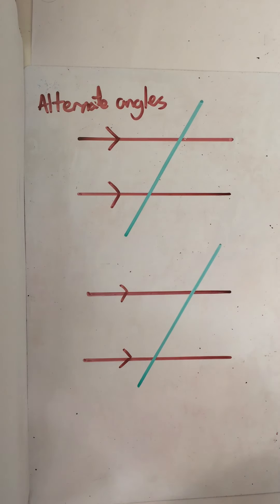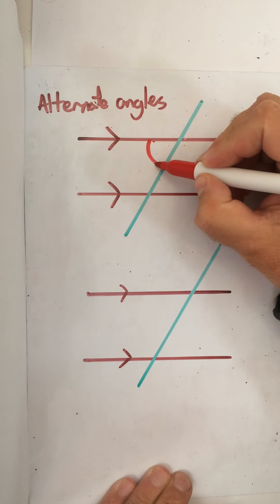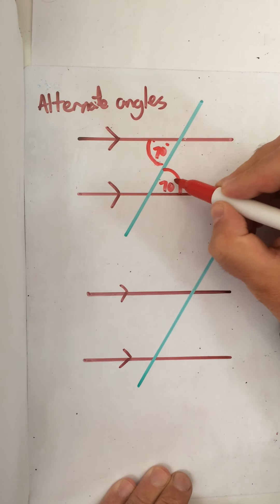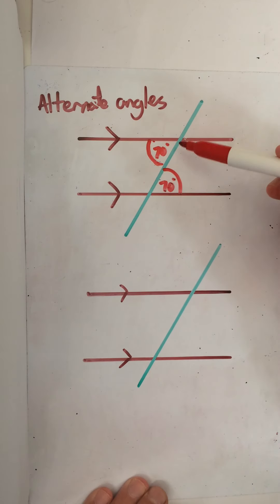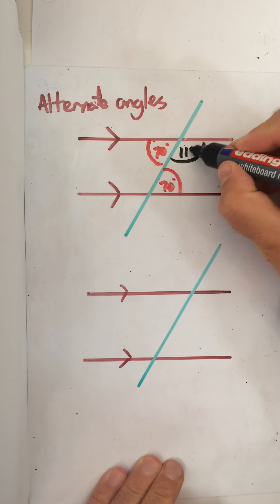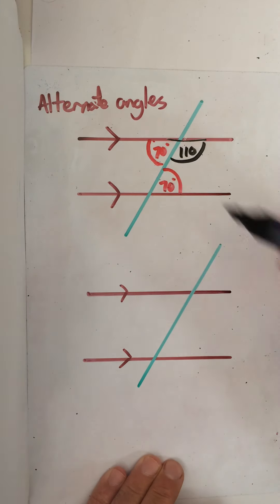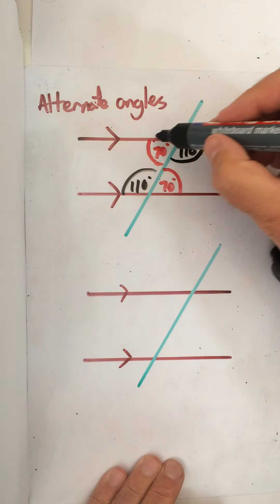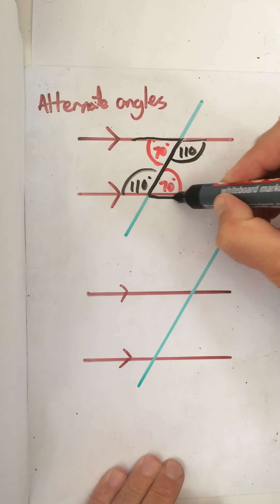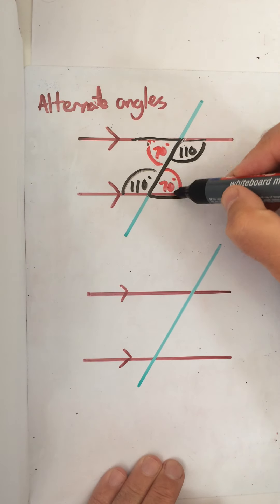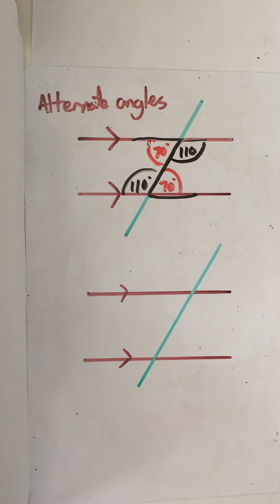This is the one where we have a Z shape — alternate angles. So for example, if this angle here is 70 degrees, then this angle here will also be 70 degrees. They alternate on the transversal. And then obviously if this one would be 110 degrees because it's a straight line and angles on a straight line equal 180, so this one here is also 110 because they're also alternate. So with alternate angles you're looking for the Z — the insides of the Z will be the same.